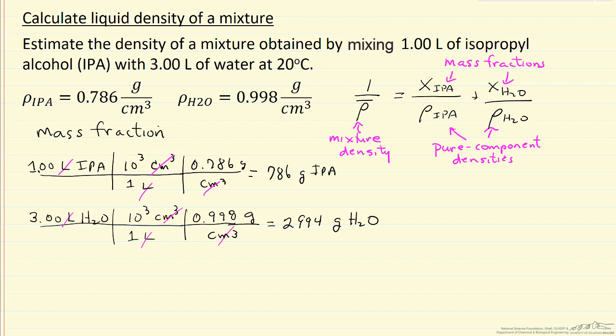So now that I have the masses, I can calculate the mass fraction of isopropyl alcohol: 786 grams of isopropyl alcohol, and then the total is the sum of these two. So this mass fraction is 0.208, which means the mass fraction of water is 1 minus 0.208, which is 0.792.